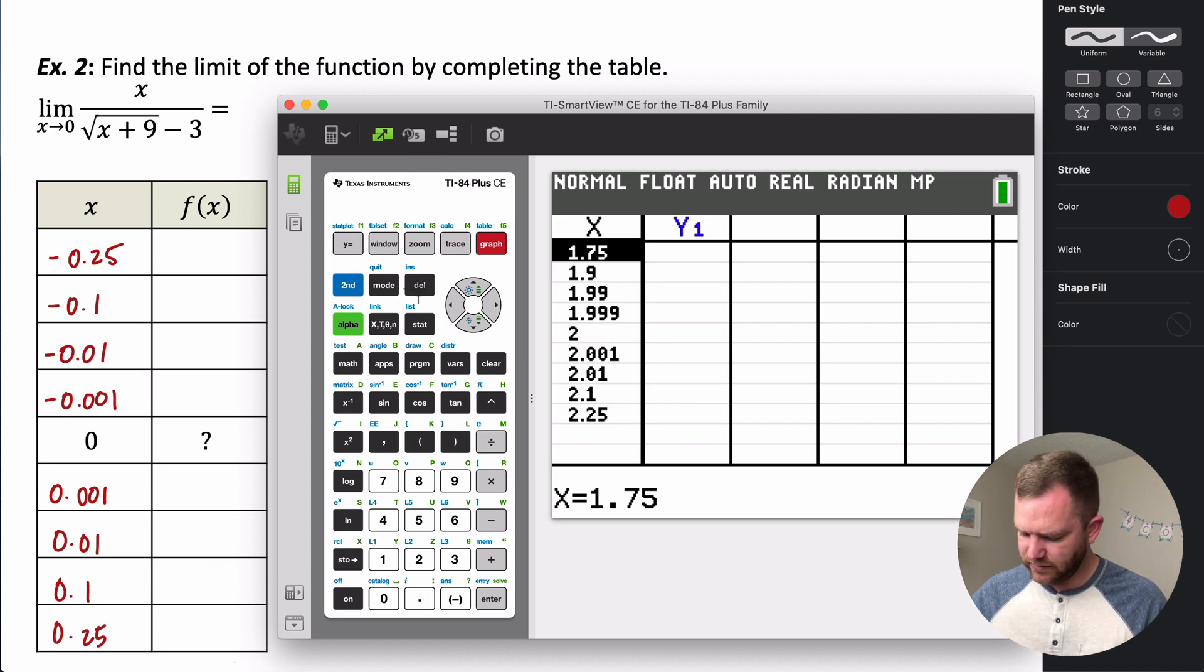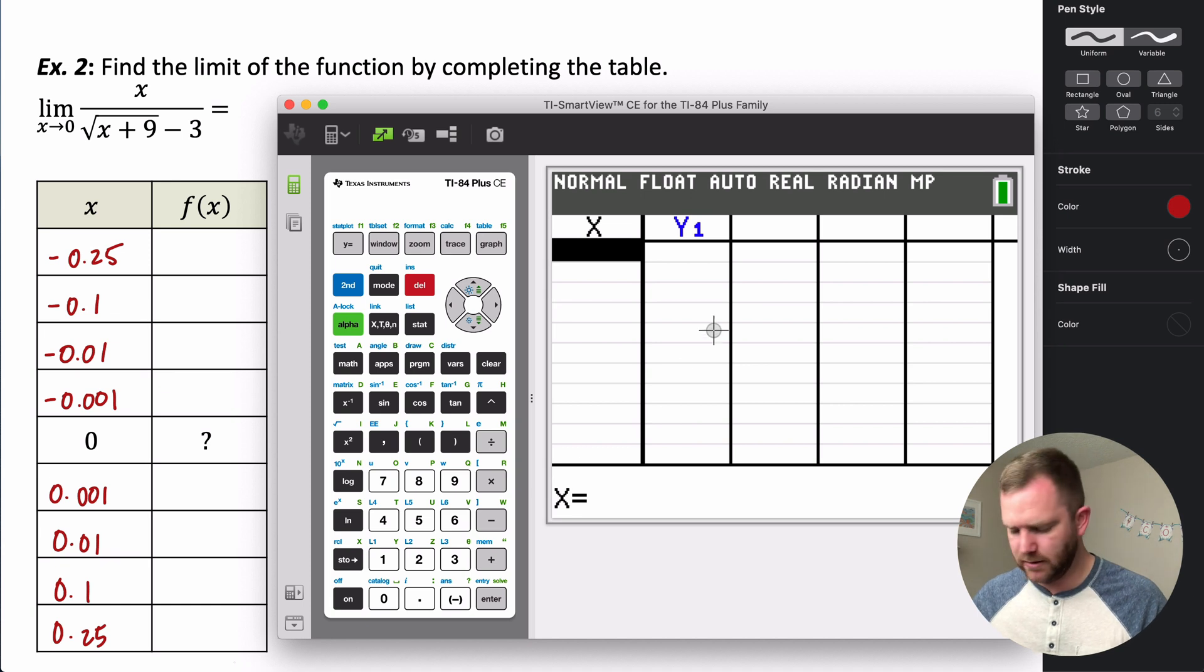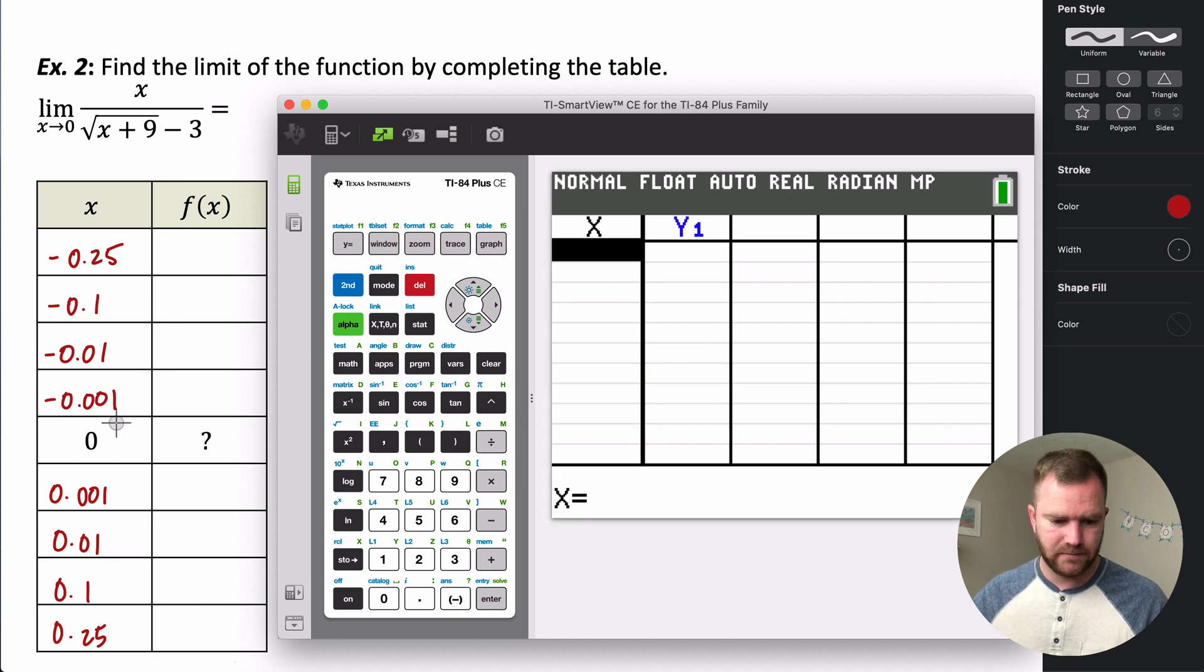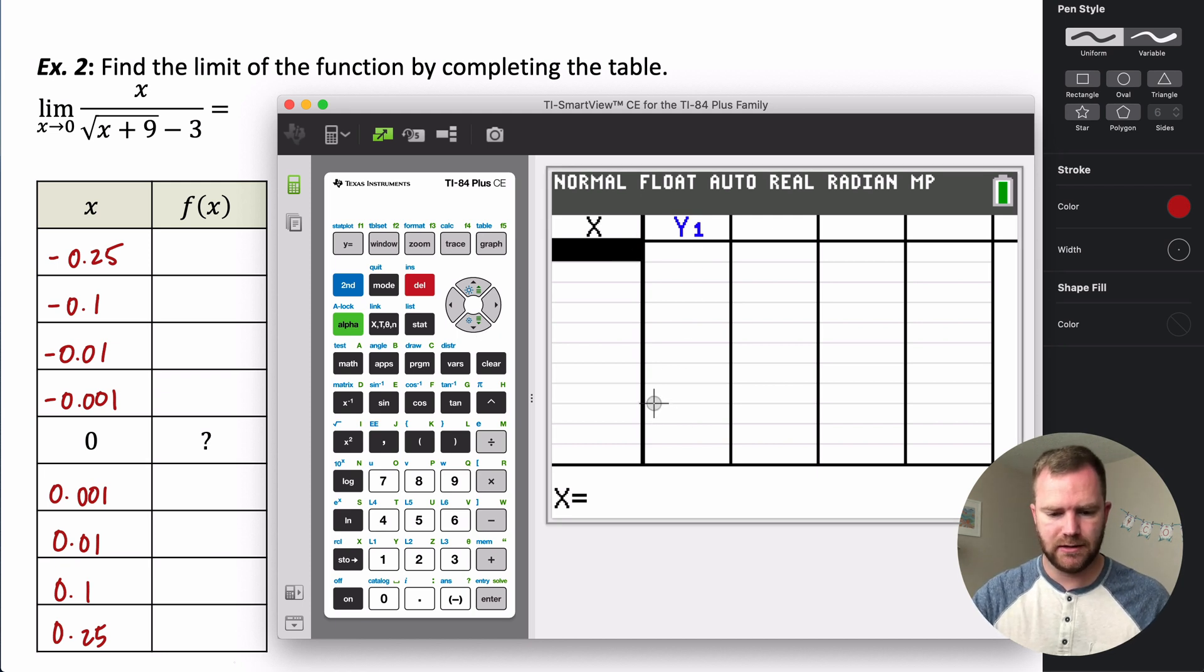And we can delete all of these values. So just delete these values out of our table because that's not the numbers that we want to use anymore. So we want to use these. So go ahead and input those into your table, and then we'll come back and see what the limit is approaching.